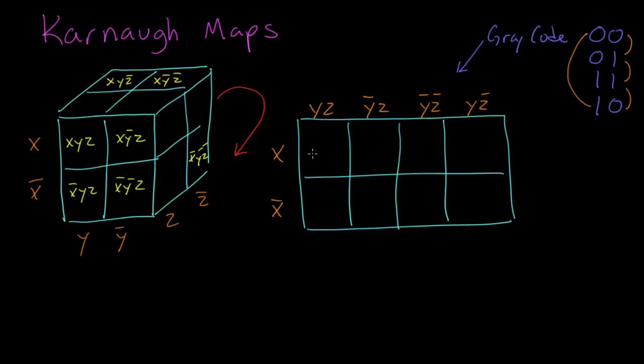So let's label each one of the cells with their variables. The top left is x, y, z. The next one is x, not y, z. The next one is x, not y, not z. And x, y, not z. Bottom row is done similarly.